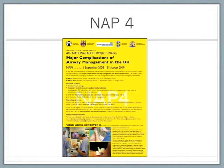Why do we need a checklist? The Royal College of Anaesthetists published a year-long prospective study in March 2011 known as NAP4. At least one in four major airway events reported to NAP4 was from intensive care or the emergency department, and the outcome of these events was more likely to lead to permanent harm or death than events in anaesthesia.